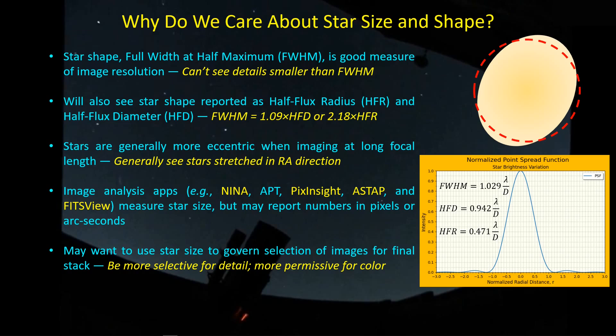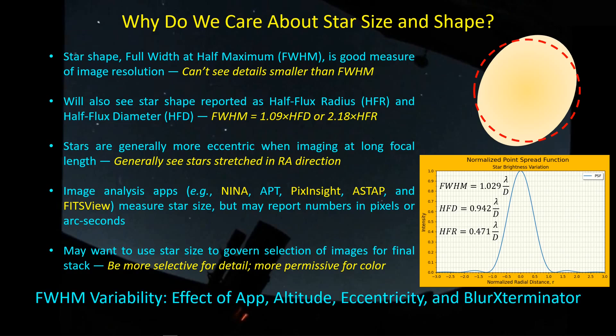It's often a good idea to use star size or star shape as a metric in selecting images for a final stack. You might want to be more selective if you're looking for detail in an image, for example with luminance and H-alpha, and you might want to be more permissive if it's just stacking images for color — RGB, maybe O3 and S2. The problem is there's a lot of variability, not just in terms of the altitude, eccentricity, and what Blur Exterminator might do, but the applications themselves — NINA, PixInsight, ASTAP, and FitsView — just to name a few, have their own variability and leave us wondering: what is the actual full width at half maximum?